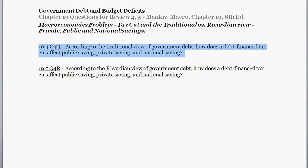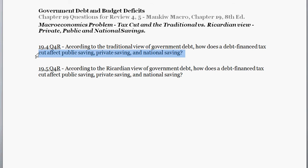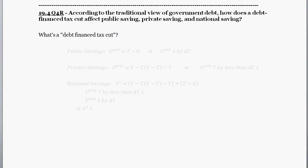This is from the questions for review — the shorter questions at the beginning. Part one asks: according to the traditional view of government debt, how does a debt-financed tax cut affect public savings, private savings, and national savings? First off, what's a debt-financed tax cut? A debt-financed tax cut is when we reduce taxes without any corresponding change in government spending.